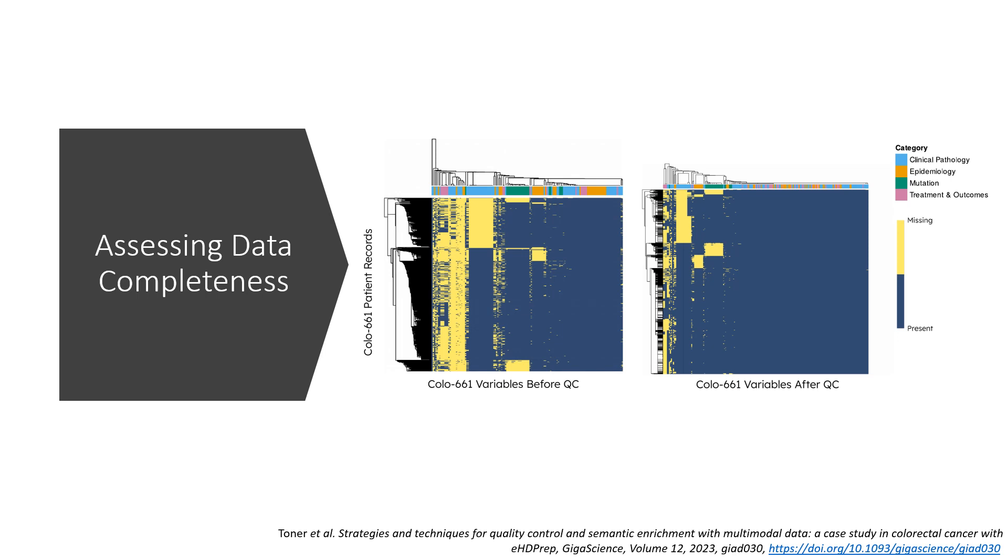Part of the completeness assessment in eHDprep is the generation of a heatmap which clusters values based on their presence in blue or absence in yellow. This reveals patterns of both random and non-random missingness in our case study dataset COLO 661 before and after quality control.